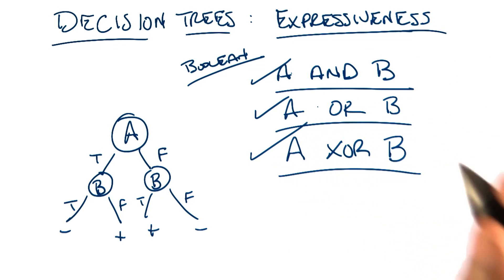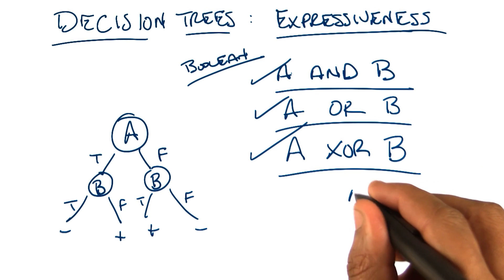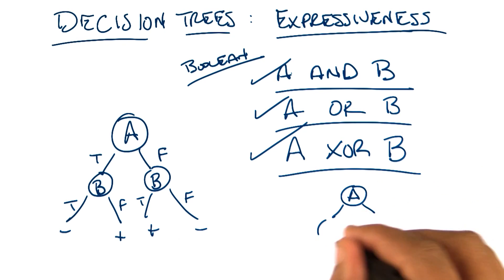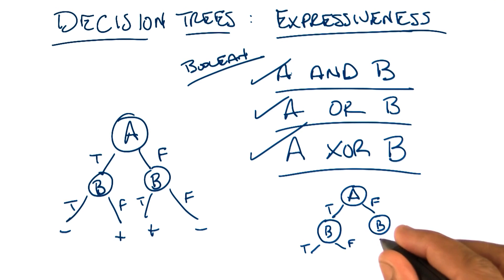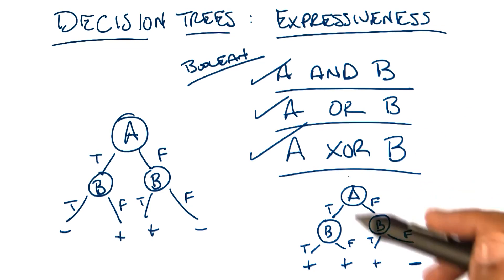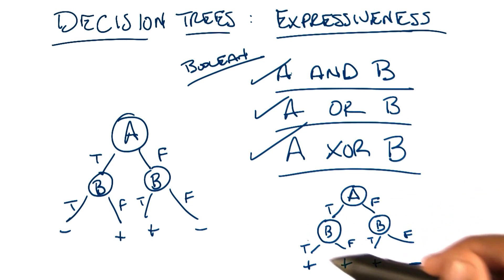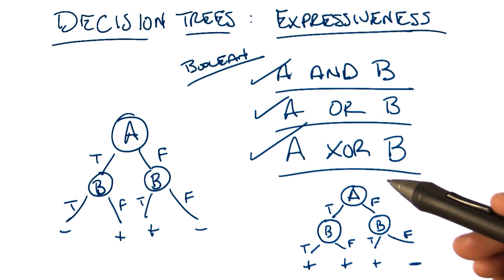And in fact, if we wanted to do OR again, we could say, well, I was very smart last time, but I could actually write OR like this. And then just fill out the values at the bottom. If A is true and B is true, then yes. If A is true and B is false, then yes. If A is false and B is true, then yes. If A is false and B is false, then no. And this is a perfectly legitimate decision tree to represent OR, because it basically is just another simple representation of the truth table.